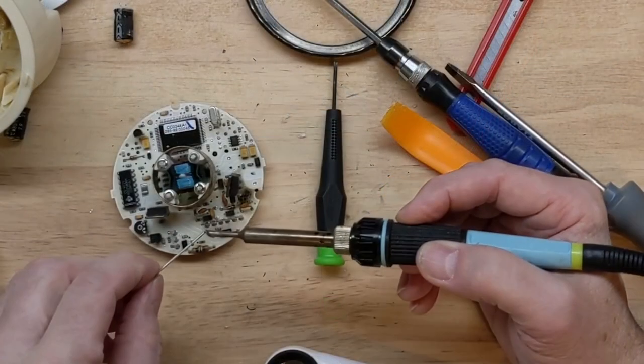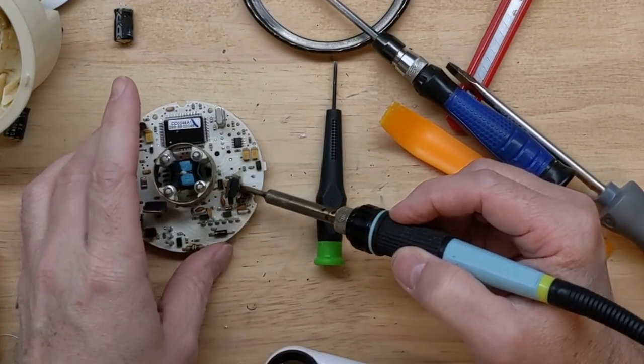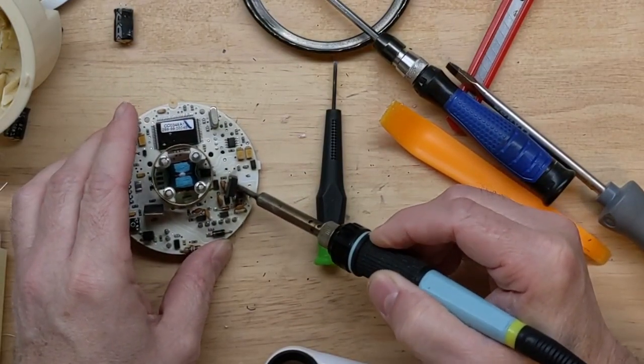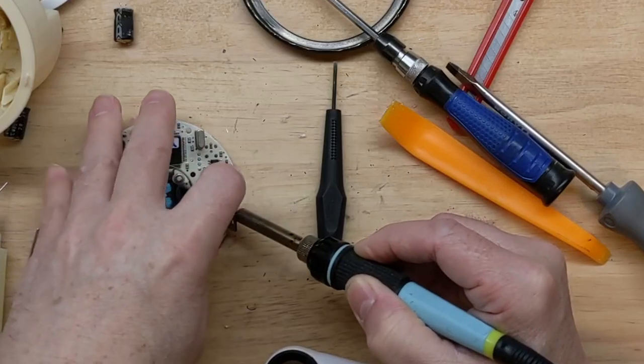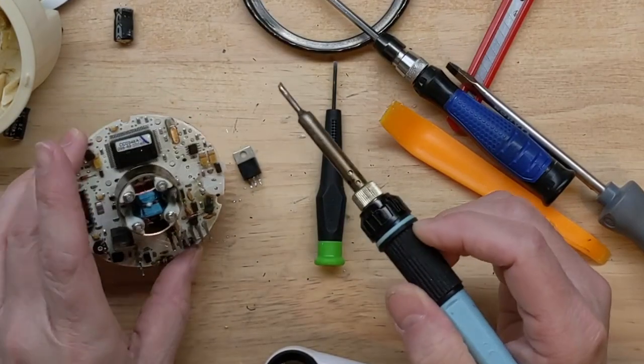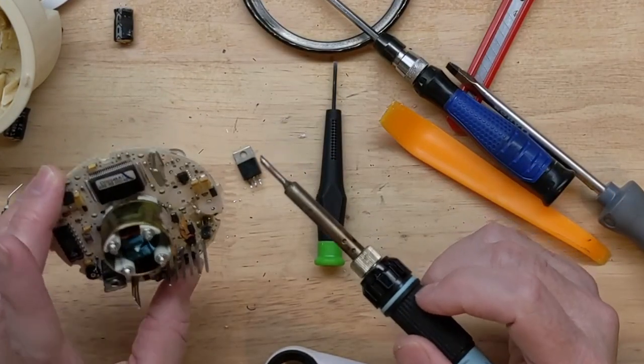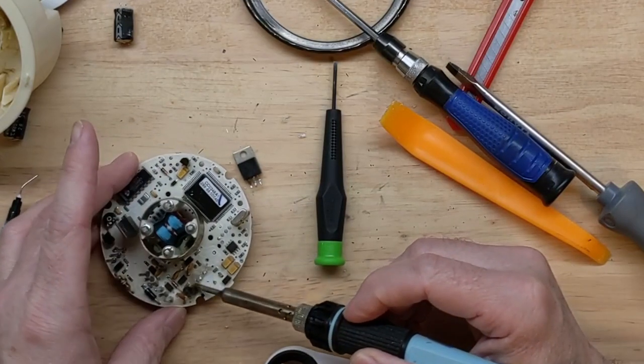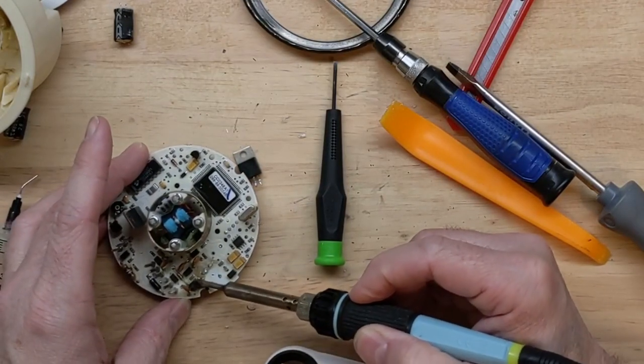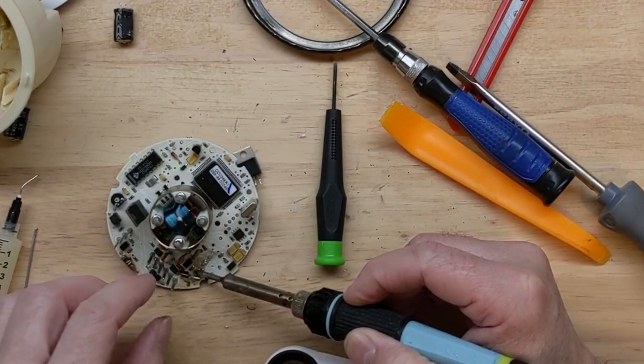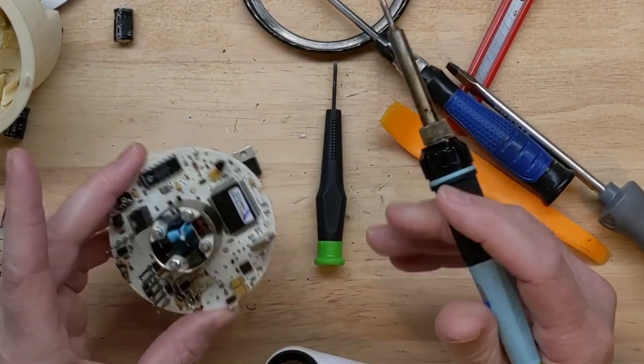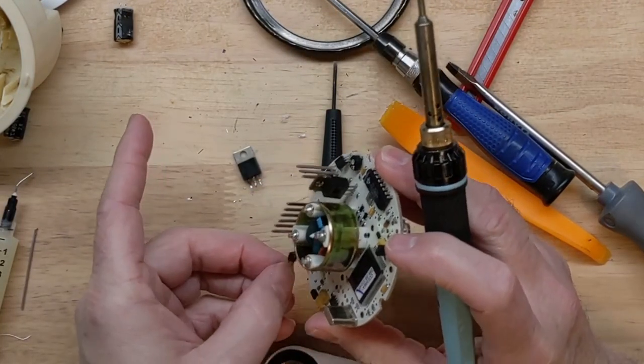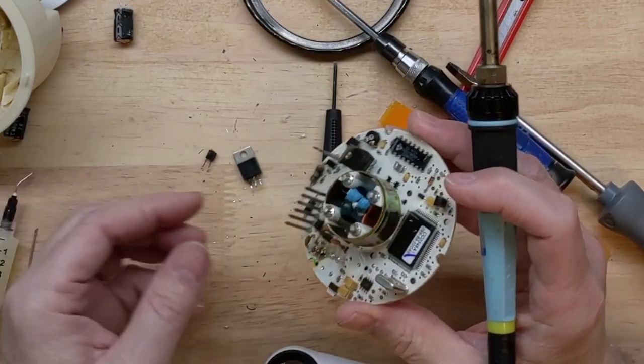This looks like a TIP48 transistor and it does check shorted. So, low melt solder helps that come right out. We're also going to remove the rest of what's left of this MPSA42. These are both NPN transistors. So, that's four components removed.